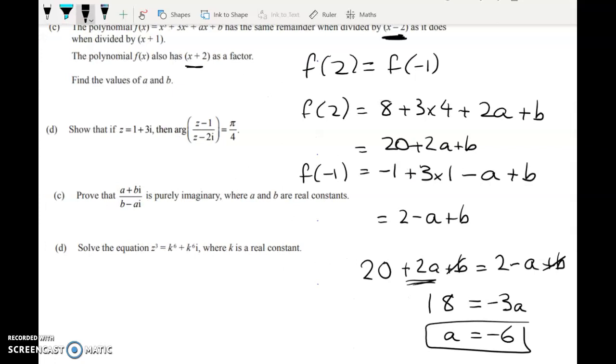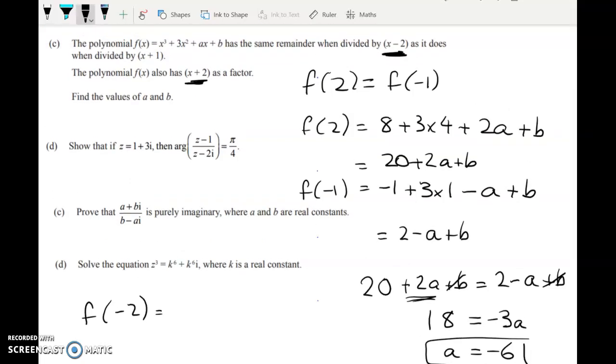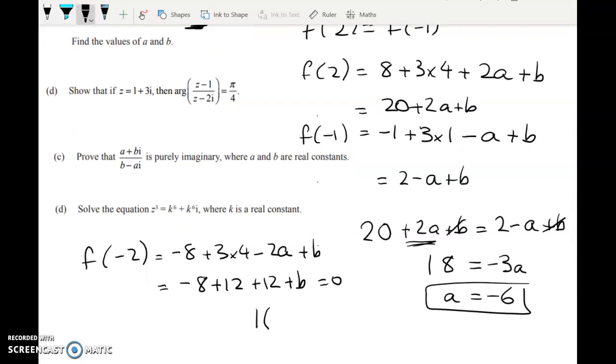And now we're going to use the condition that x plus two is a factor. And that means that f of negative two has to equal zero. So f of negative two is equal to negative eight plus three times four minus two a plus b. But we know what a is now, right? So we've got negative eight plus 12 plus 12 again, plus b, and that equals zero. So 24 minus eight is 16 plus b is equal to zero, b is equal to negative 16. So that's that question done.